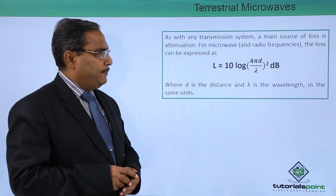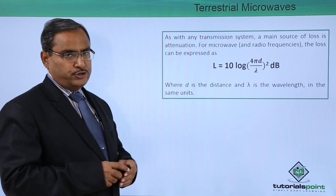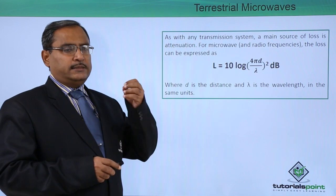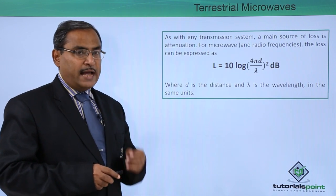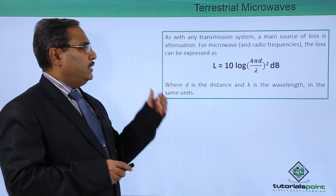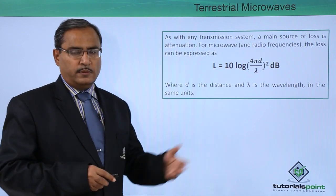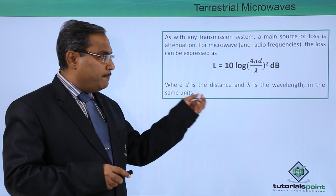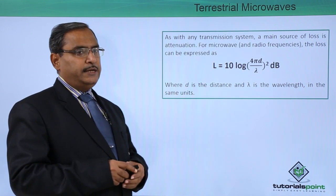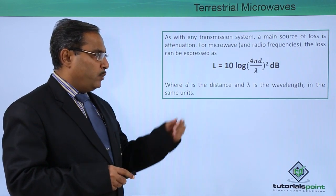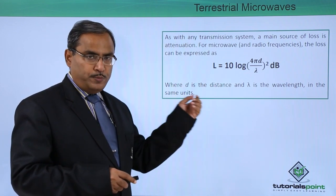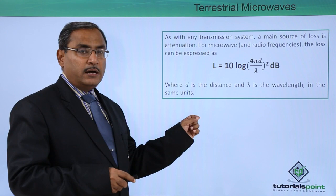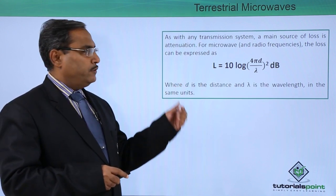As with any transmission system, a main source of loss is attenuation. During transmission, as the signal travels along with distance, the strength of the signal decreases — this is known as attenuation. For microwave and radio frequencies, the loss can be expressed as: Loss = 10 log(4πd/λ)² dB, where d is the distance and λ is the wavelength in the same units. Note that d and λ must always be in the same units.